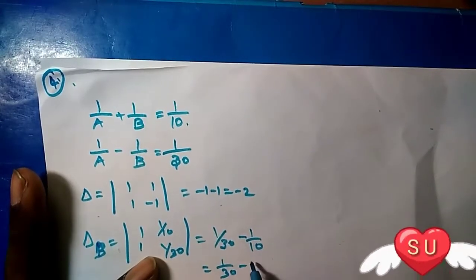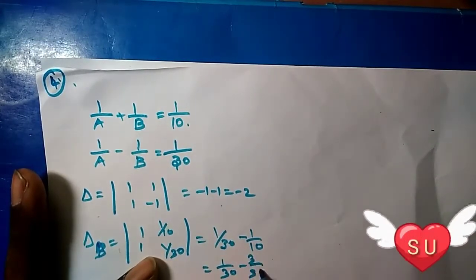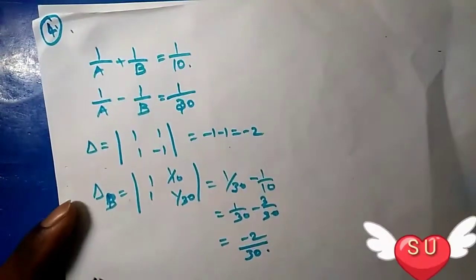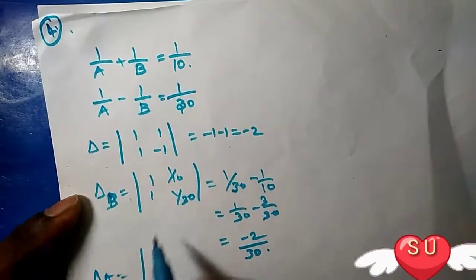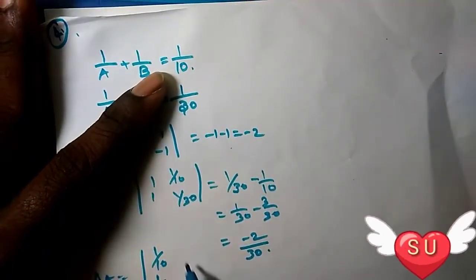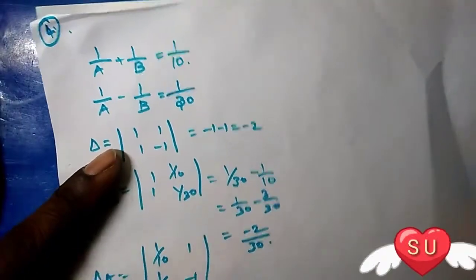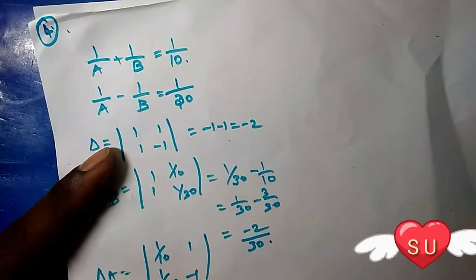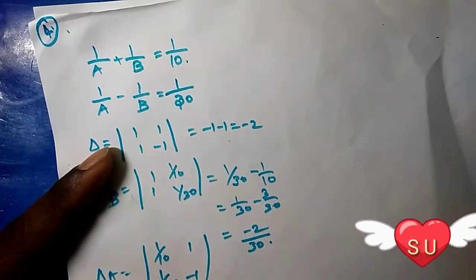Del A is -2/30. Next is del B. Del B: we have 1/10, 1/30; 1, -1, which gives us -1/10 - 1/30.